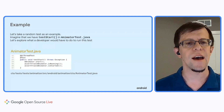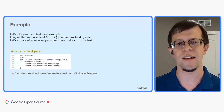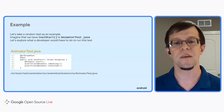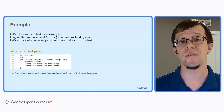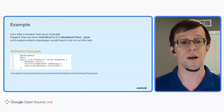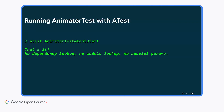So let's look inside a relatively simple test. Imagine we have a test start in the AnimatorTest class. What does this test do? Well, it's a pretty simple test. It starts the animator, and then it verifies, or asserts, that it's both running and that it has been started. Now we understand what it's doing, but how do we run it? Fortunately, ATest makes this very, very easy. It's as simple as: atest AnimatorTest#testStart. Nothing else. No dependency lookups or module lookups. No special parameters are required. ATest really greatly simplifies launching tests on Android.